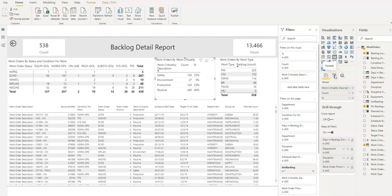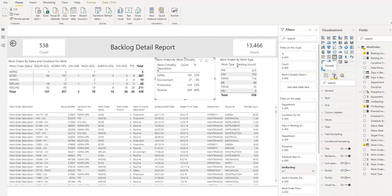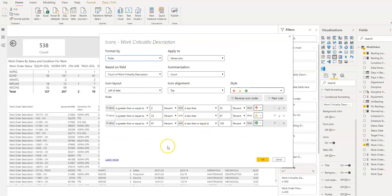So if we go into the format options with the table selected, go to conditional formatting and we first need to select the column we want to apply the icons to. I'm going to apply it to the work criticality description, then in field formatting conditional formatting I'm going to select the icons option.